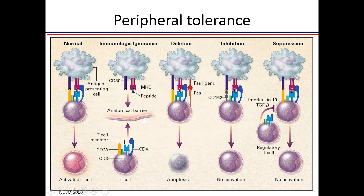One peripheral tolerance mechanism is the anatomical barrier: autoreactive T cells can never access immunologically privileged sites like the brain, testes, and eye due to barriers like the blood-brain barrier. For example, autoimmune eye disease occurs only if there is injury, like sympathetic ophthalmia, where inflammation spreads to the other eye because sensitized cells were already generated.